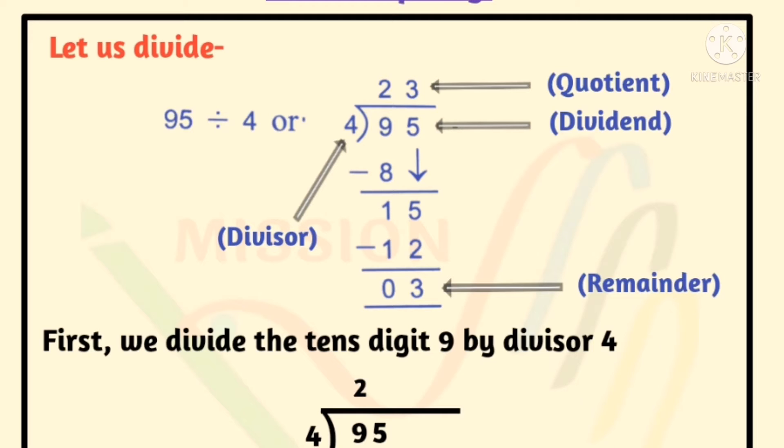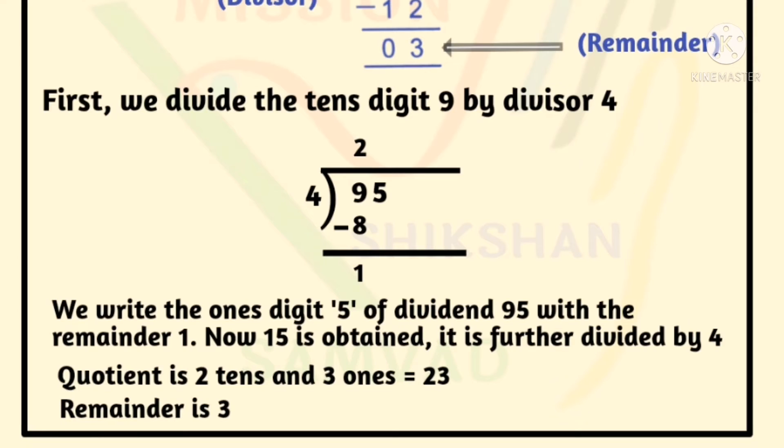Let us divide 95 by 4. First we divide the tens digit 9 by divisor 4. 4 times 2 is 8. We write 8 below 9 and subtract 8 from 9, which gives 1. And 2 as quotient we write above.